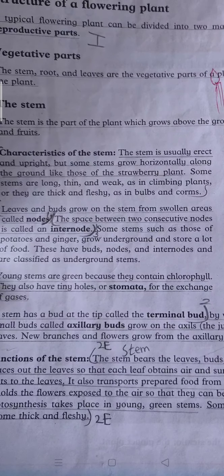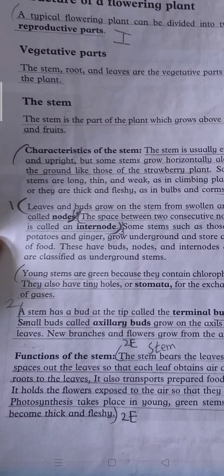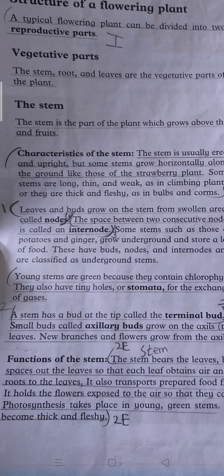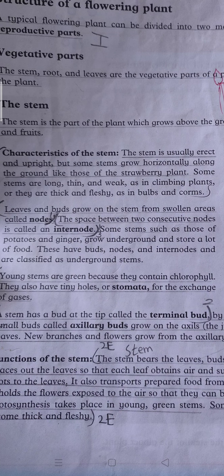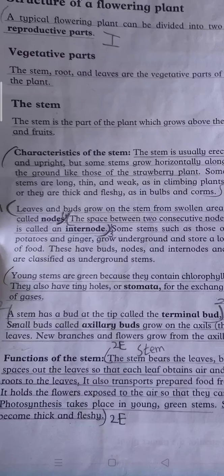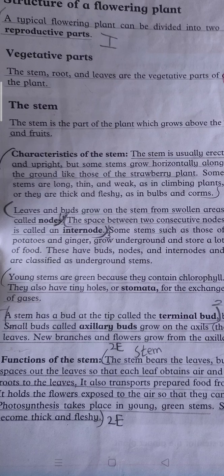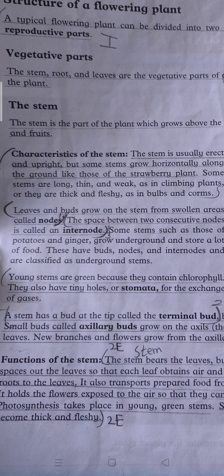Some stems, such as those of potatoes and ginger, grow underground and store a lot of food. This is food Allah Almighty has made, fruits and vegetables, and other uncountable things for humans. Some stems such as those of ginger and potato, which is adrak and aloo.